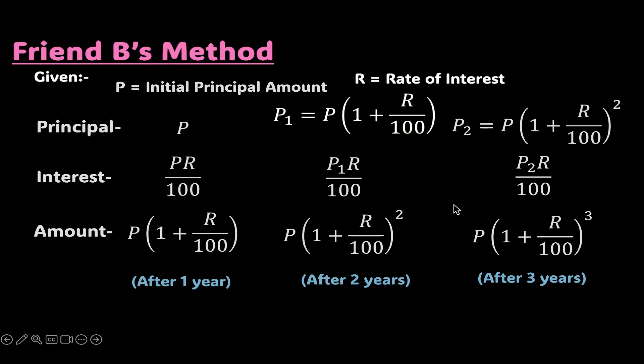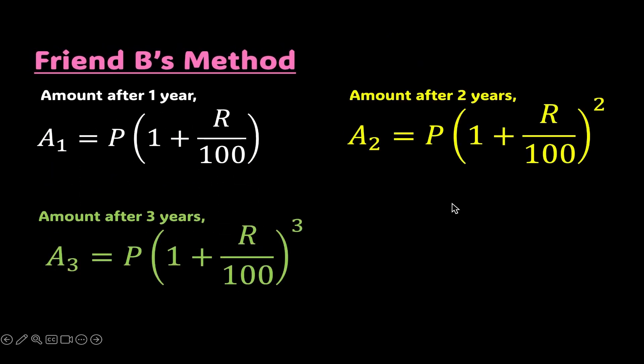But this calculation is too cumbersome and difficult. It would have been so nice to have a formula to directly find the interest after T years, isn't it? How about we find it out by our observation skills?